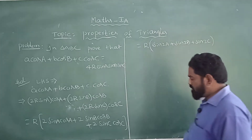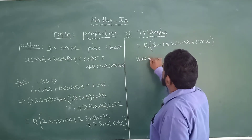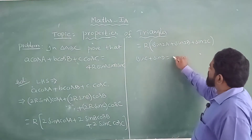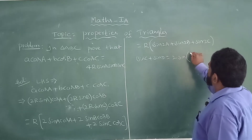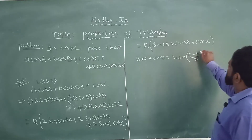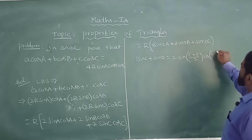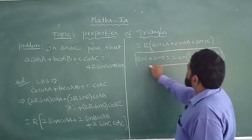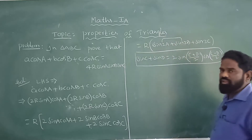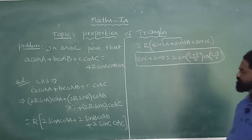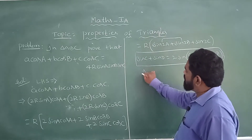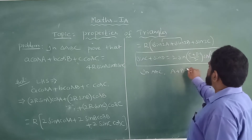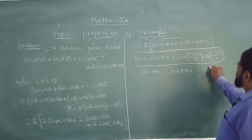We have used the formula: sinC + sinD = 2·sin((C+D)/2)·cos((C-D)/2). These two terms are treated as sinC + sinD. One more thing: in triangle ABC, A + B + C = 180 degrees.